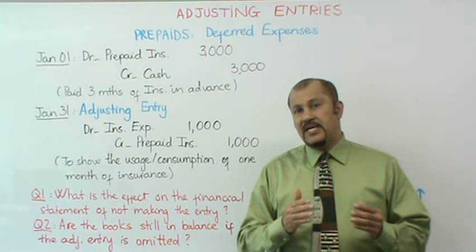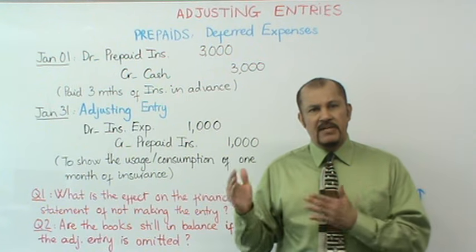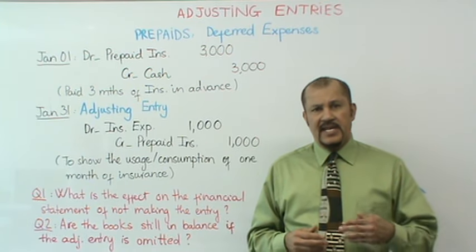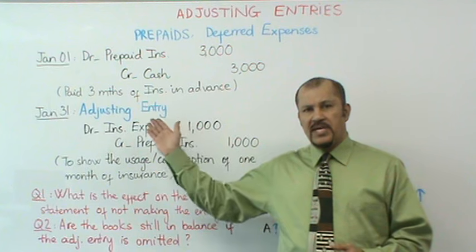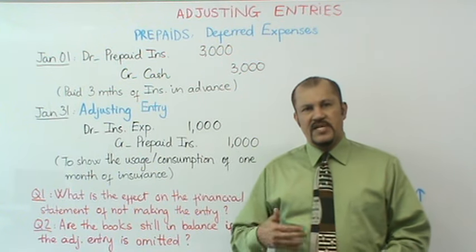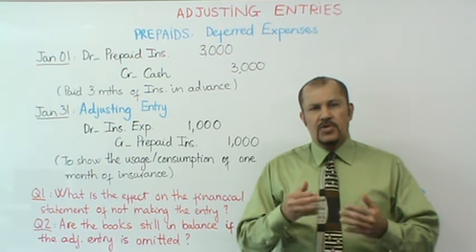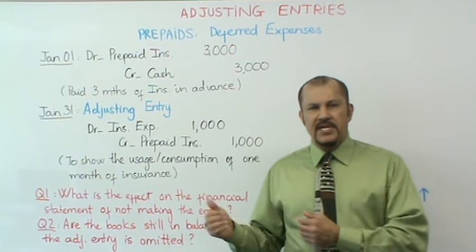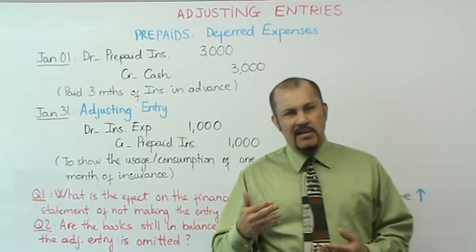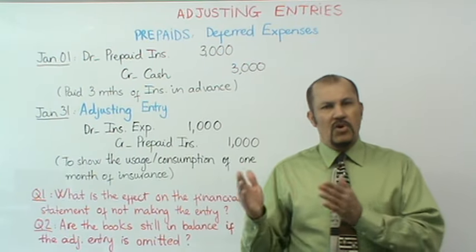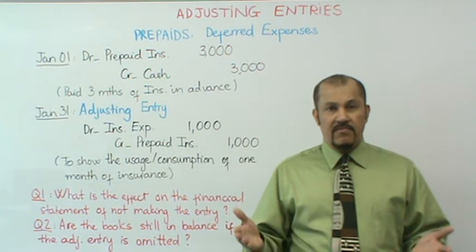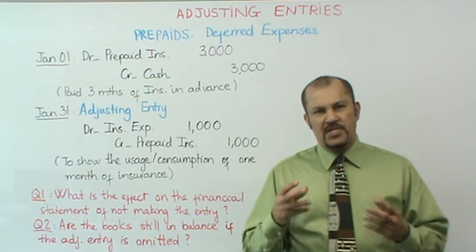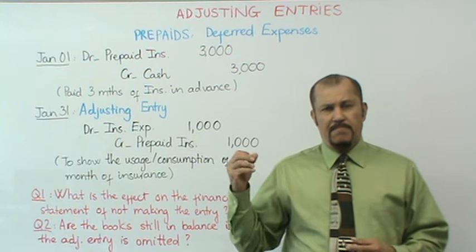What kind of account is prepaid insurance? All prepaids, including prepaid insurance, are asset accounts. An asset is something that you own. So when the company pays money in advance for insurance, the company owns the right to receive insurance coverage from the insurance carrier. For example, if this were health insurance for employees, the employees would receive medical treatment either for a reduced fee or free of charge depending on their coverage. The employer has purchased — and owns — peace of mind.